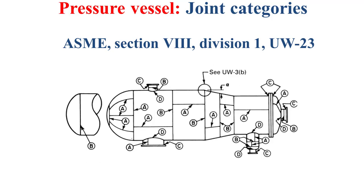Category C includes any welded joint connecting flanges to the main shell, to the transition in diameter, to the formed head, to the nozzles, and to the communicating chambers. Finally, category D includes any welded joint connecting nozzles or communicating chambers to the main cylindrical or spherical shells, to the transition in diameter, or to the formed heads. Additional auxiliary details can be found in ASME Section 8 Division 1, UW-23.